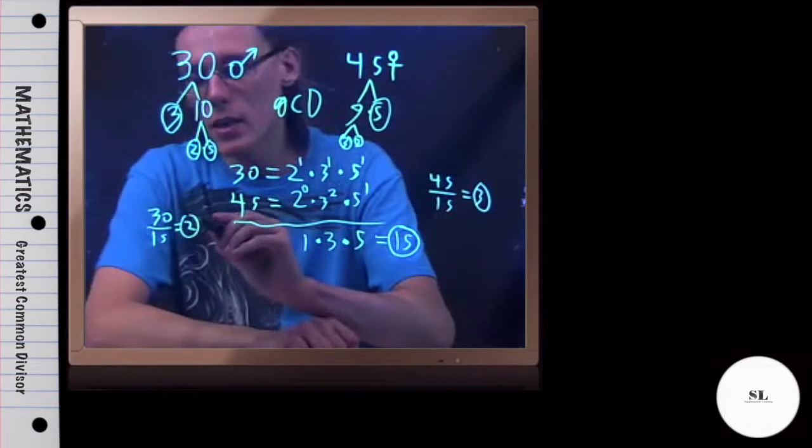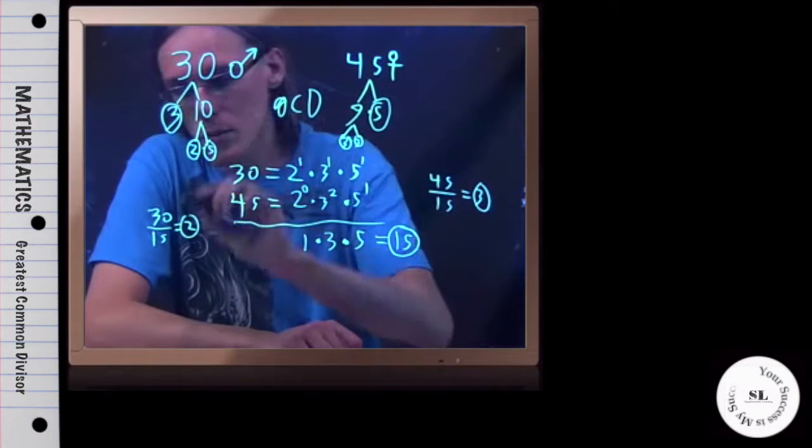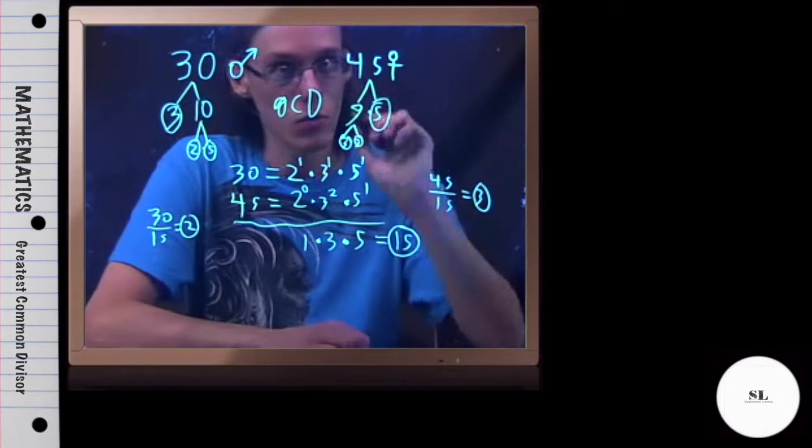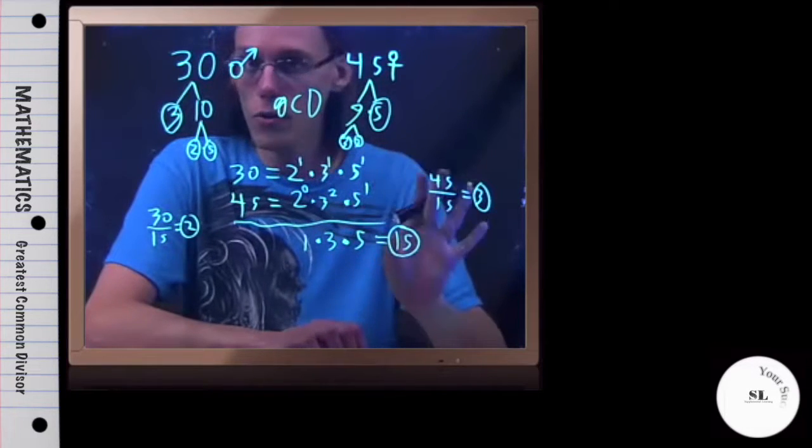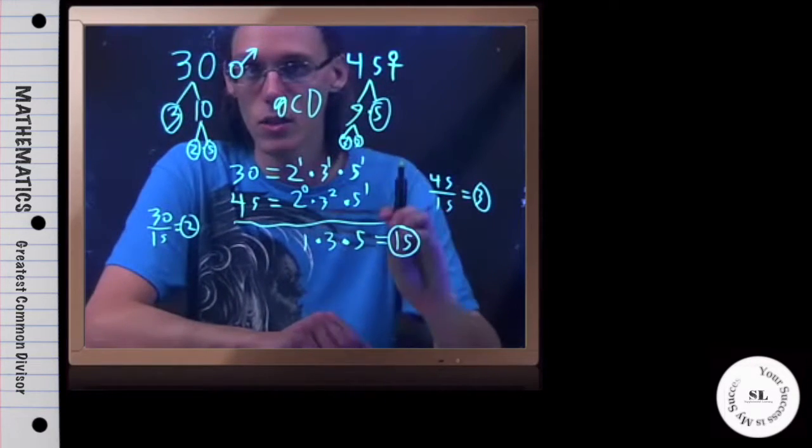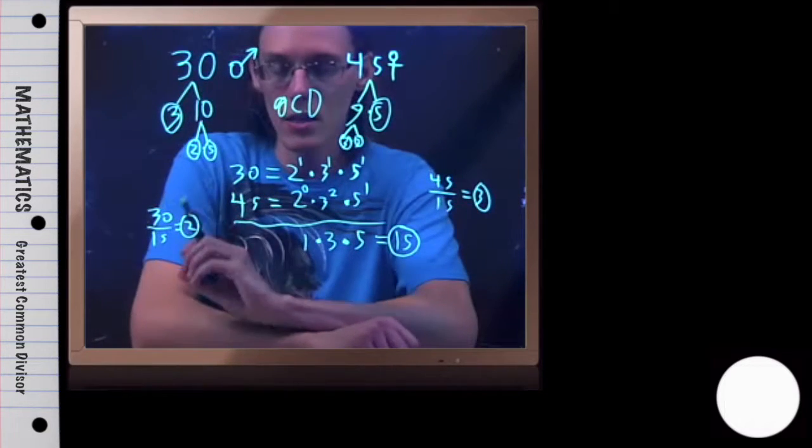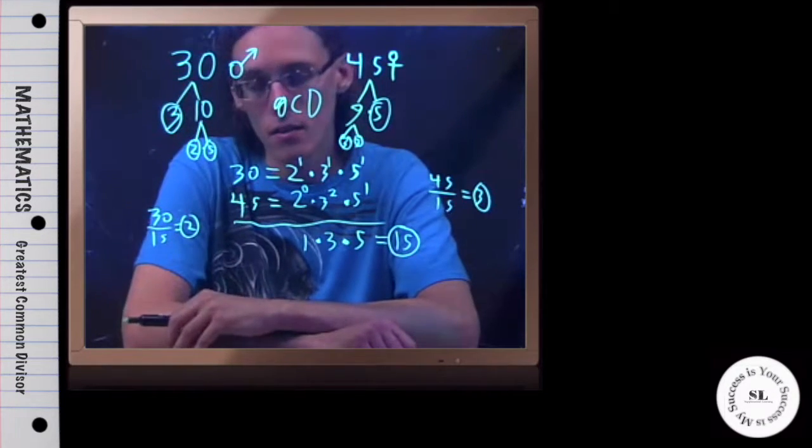So there can be 2 male teams, which each have 15 people on them, and 3 female teams, which each have 15 people on them. But all the question was asking for was what the greatest number of people on a team is, and that is right here, the 15. That's the greatest common divisor, and that is this example.